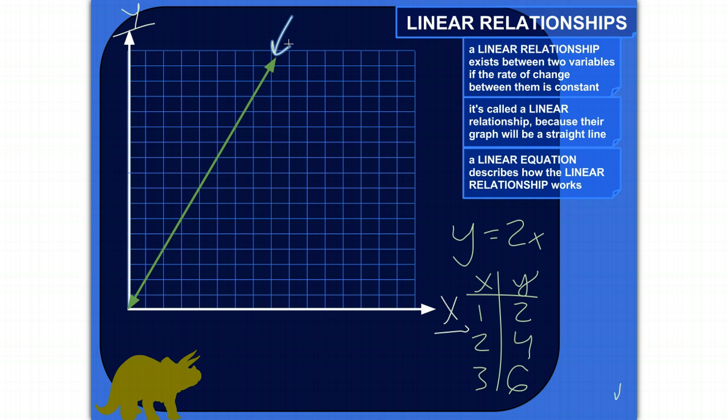And a linear equation describes how that linear relationship between the variables works. So here I've got a linear equation which describes how y and x relate to each other. And then I've got a table of values that shows different values for x and different values for y. And then I've graphed the same function here as a line. So these are three different ways of looking at this linear relationship between x and y.